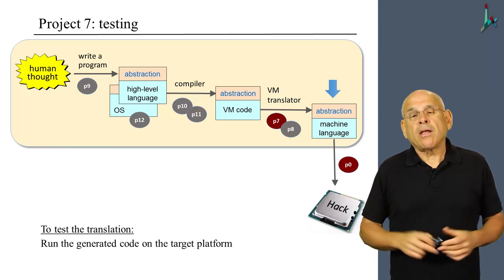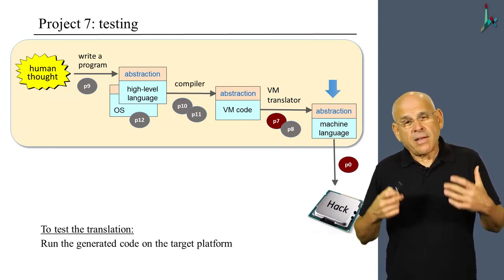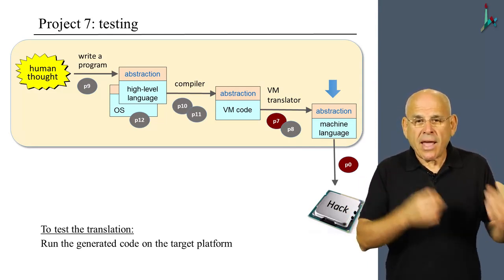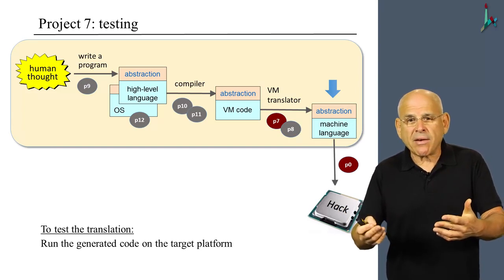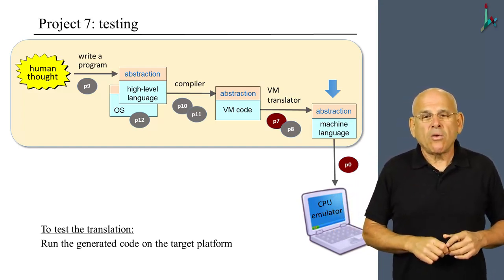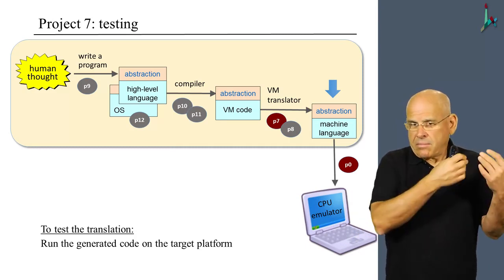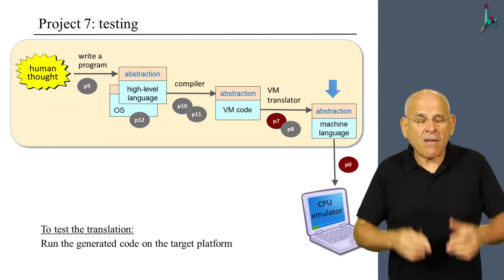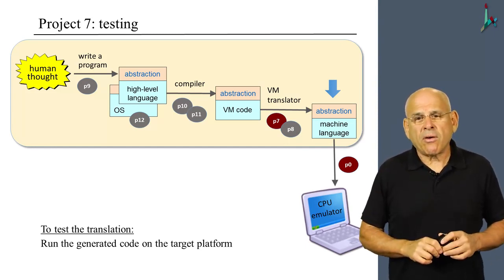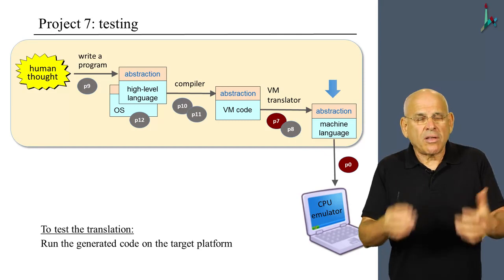Going back to the overall picture, we can load the code into the machine level and run it. If you didn't take NAND to Tetris Part 1, or even if you did, there's an alternative way of doing it. Instead of using the actual Hack computer, we can use a supplied CPU emulator that can run Hack programs as-is and do exactly what the host platform would do for real. If you downloaded the NAND to Tetris software suite, you have this program available — we use it in project zero, and we can use the CPU emulator to test that the resulting code does what it's supposed to do.